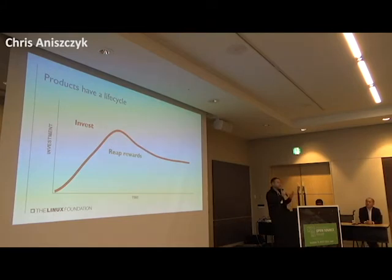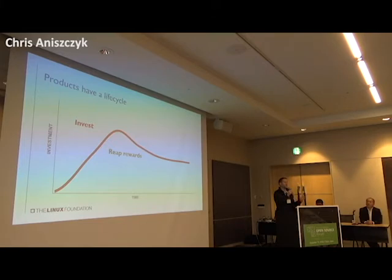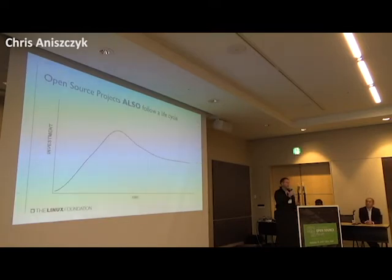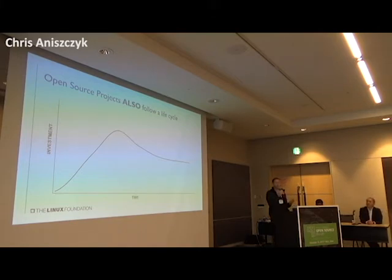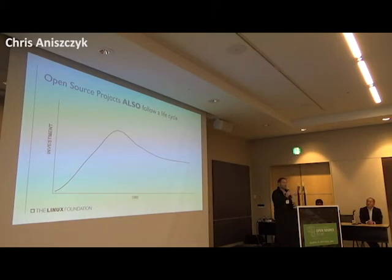This is a typical lifecycle diagram — all products have a life cycle. You build them out, invest to grow them, eventually things become stable, and things kind of sunset over time. The goal is you invest and reap the rewards. There's no difference between an open source project and a product when it comes to this life cycle — open source projects grow and eventually get used widely or they die, and things get sustained or sunset over time.